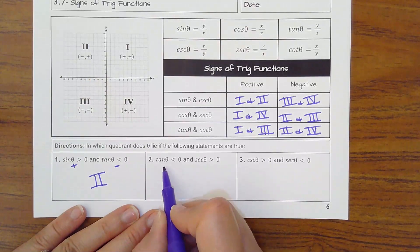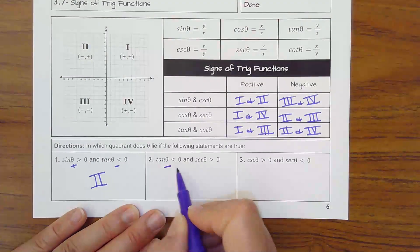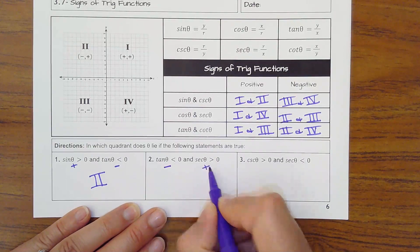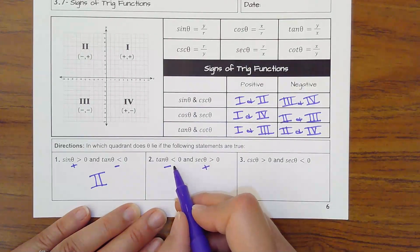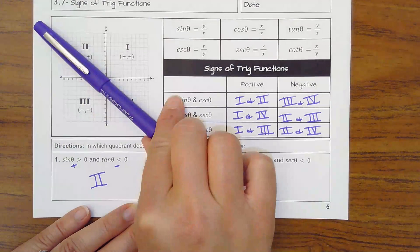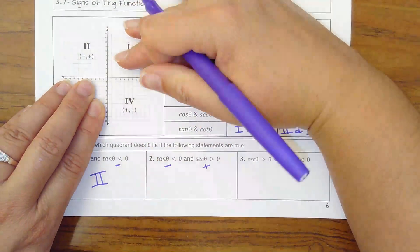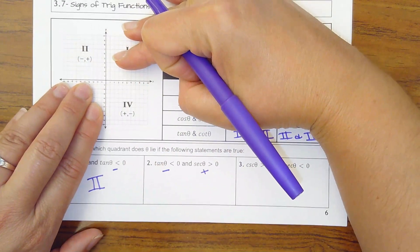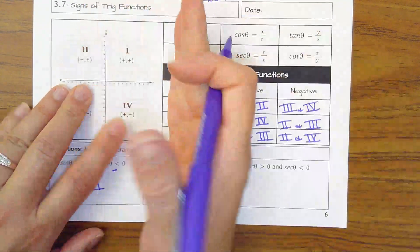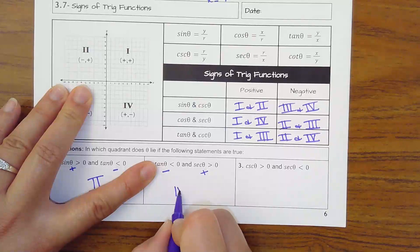Number 2. Where is tangent less than 0? Where is secant greater than 0? So start with where is tangent negative? Here and here, quadrant 2 and 3. So those are the only ones we can choose between. Where is secant positive? Secant goes with cosine, which is x. X is positive when we go to the right. So that would only be quadrant 4.